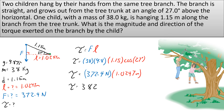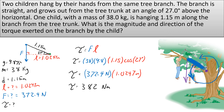The units for torque are newton meters. For direction: the child's weight is pulling the branch downward. The branch would rotate counterclockwise around the axis, so the torque is positive — approximately positive 382 newton meters, counterclockwise.